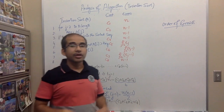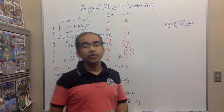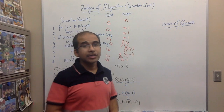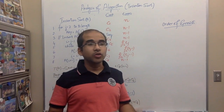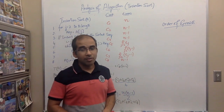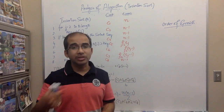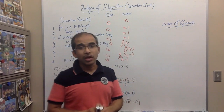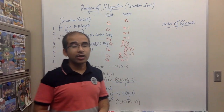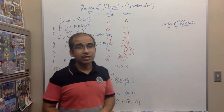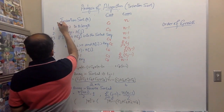Now we analyze the running time of insertion sort. Since every individual statement takes a constant amount of time, we measure the time cost of each statement and how many times it is executed, then multiply the two. We sum those values for all steps of the pseudocode to find the total running time of the algorithm.